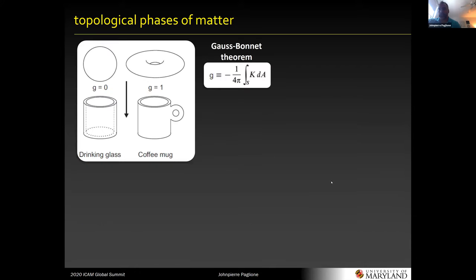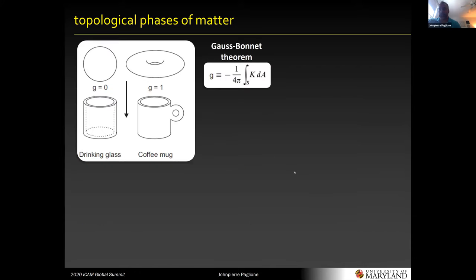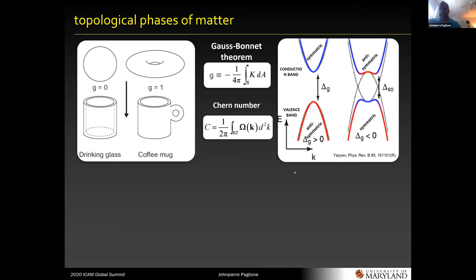Everyone's seen the coffee cup and donut analogy of topology and condensed matter physics. I always use this slide to explain how the genus is the key parameter in geometry — how many holes you have in your object. You can apply this theorem in the same way to the electronic structure. How many twists you have in the band structure gives you the so-called Chern number, and that gives you some interesting non-trivial topology to your electronic system.